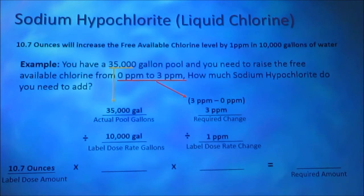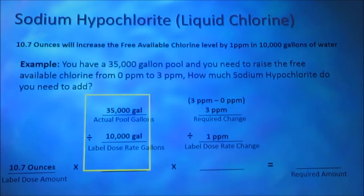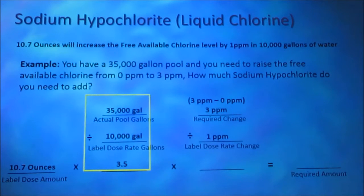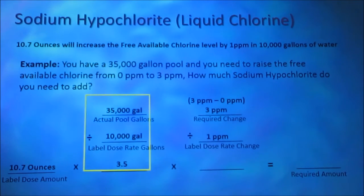We divide 35,000 gallons, our actual pool gallons, by 10,000 gallons, our label dose rate gallons, which gives us 3.5. That tells us that we have 10,000 gallons of water 3.5 times. To get a 1 part per million increase in this 35,000 gallon pool using sodium hypochlorite, we would need to add 10.7 ounces 3.5 times.